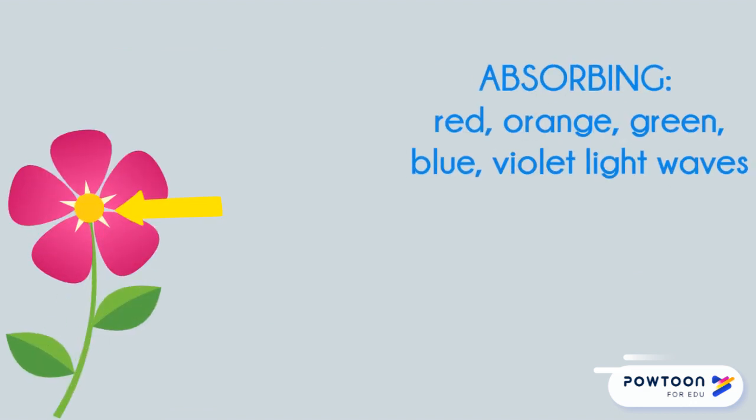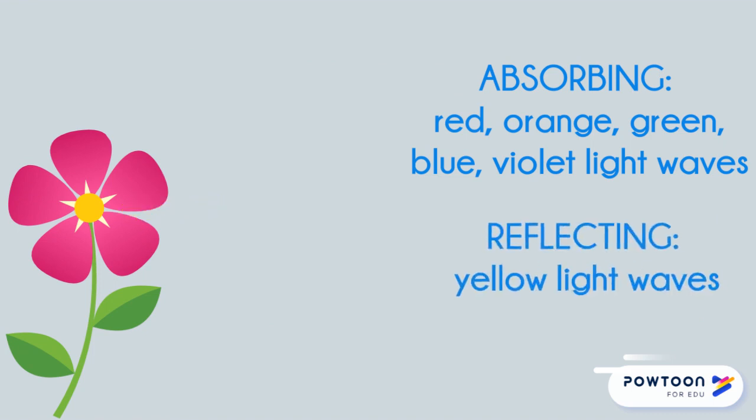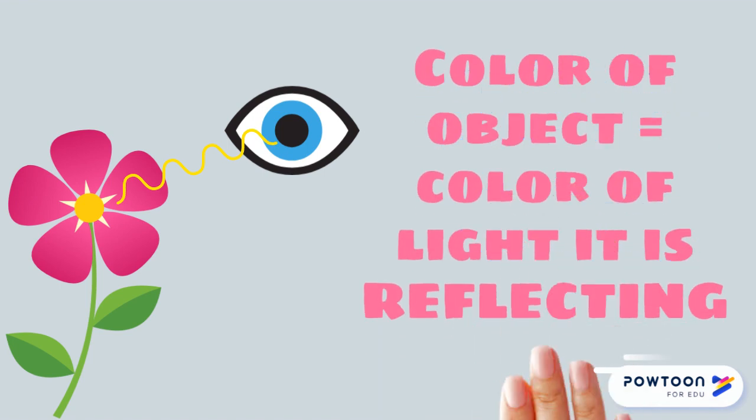The yellow center is absorbing red, orange, green, blue, and violet light waves. It is reflecting yellow light waves. These yellow light waves are what reaches your eye. The color of an object is the color of the light it's reflecting.